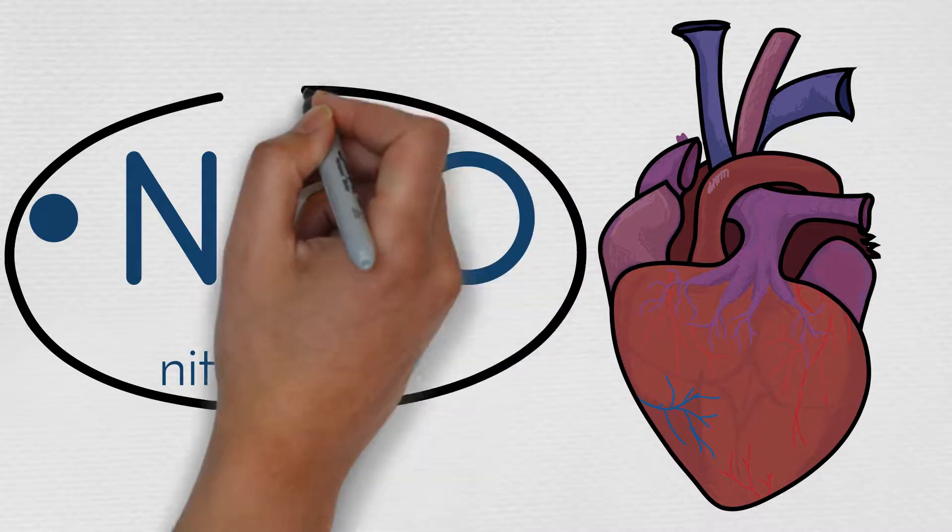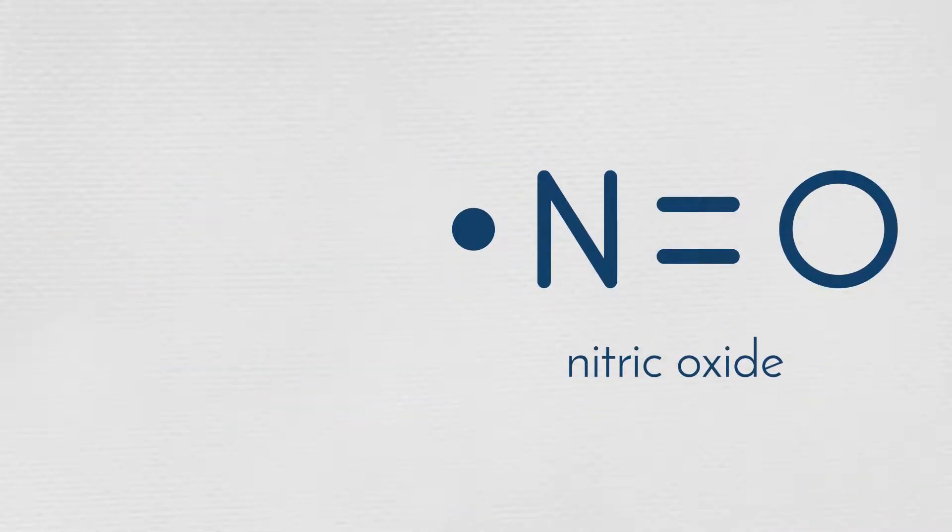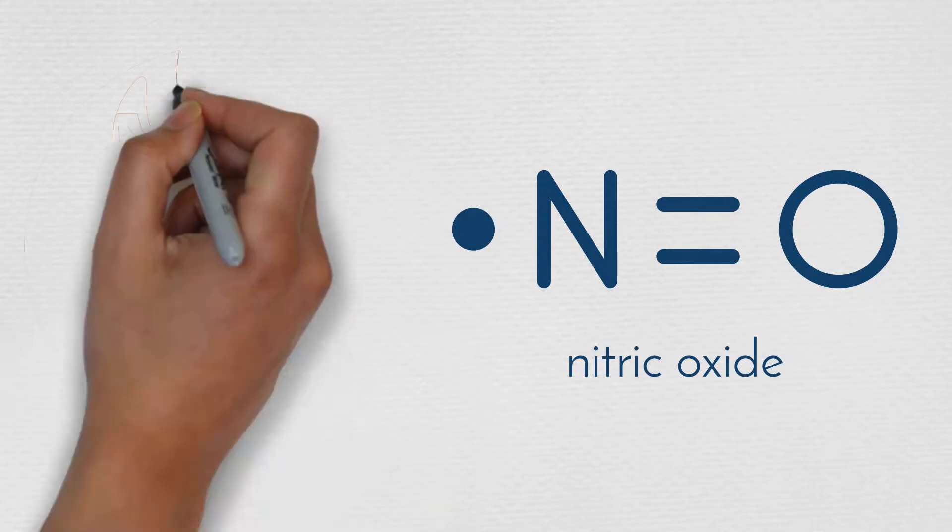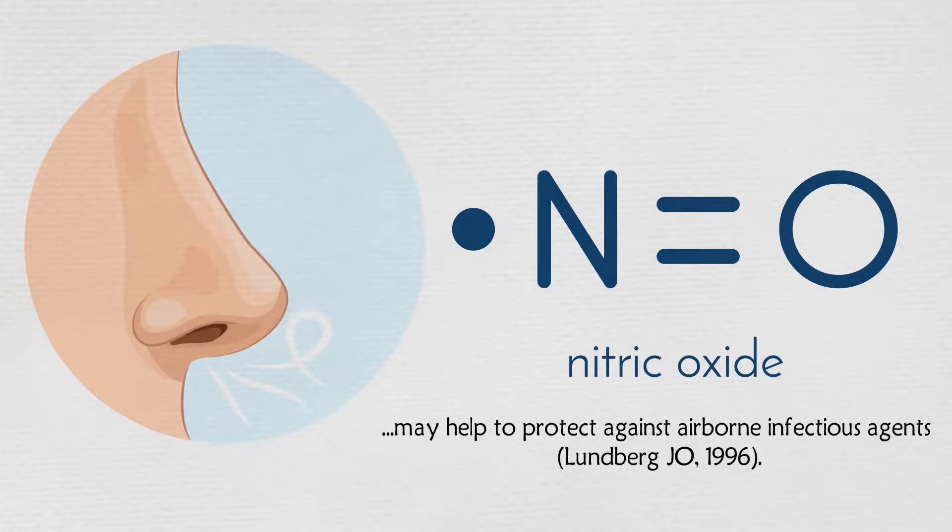There are, however, many other reasons why nitric oxide is important. The high local nitric oxide concentrations in the nasal airways and the sinuses may help to protect against airborne infectious agents.